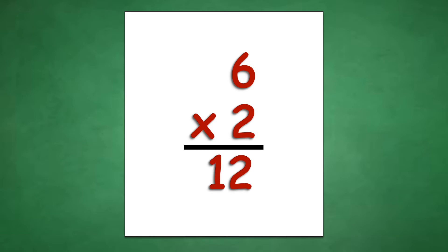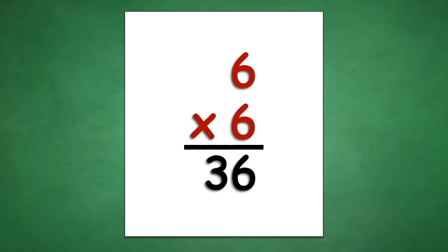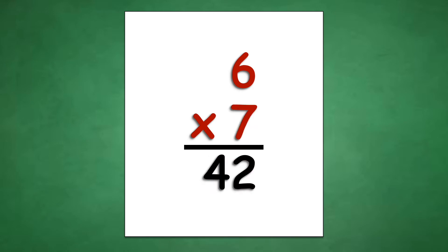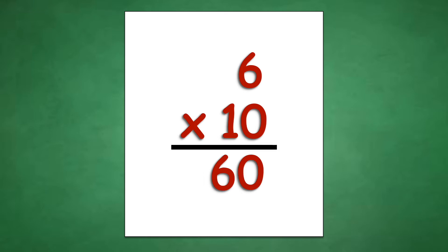Table of 6: 6 times 1 equals 6, 6 times 2 equals 12, 6 times 3 equals 18, 6 times 4 equals 24, 6 times 5 equals 30, 6 times 6 equals 36, 6 times 7 equals 42, 6 times 8 equals 48, 6 times 9 equals 54, 6 times 10 equals 60.